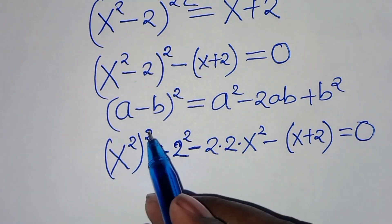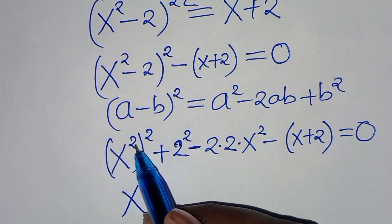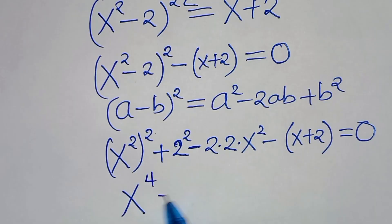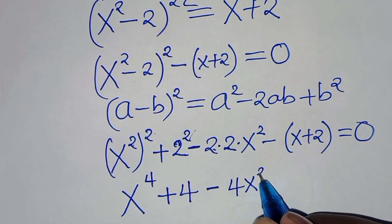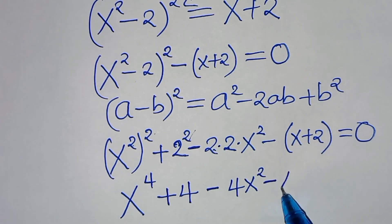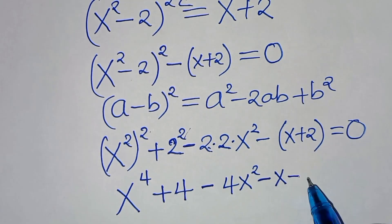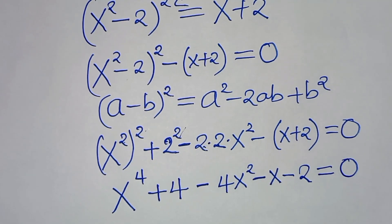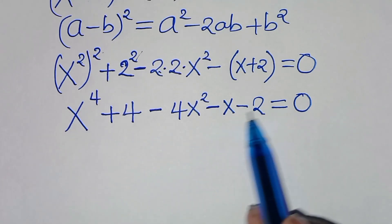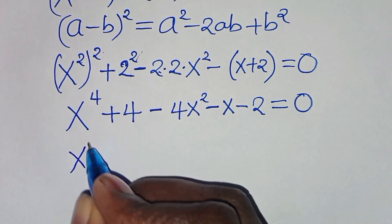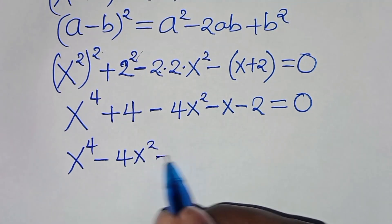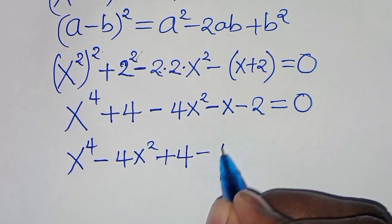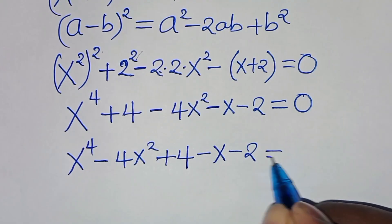The next step: x raised to power 2 times 2 is 4, then plus 2 squared which is 4, then subtract 2 times 2 which gives 4x squared, then subtract x, and minus times plus 2 gives minus 2, this is equal to 0. Rearranging, we have x to the power of 4 minus 4x squared plus 4, subtract x minus 2, this is equal to 0.